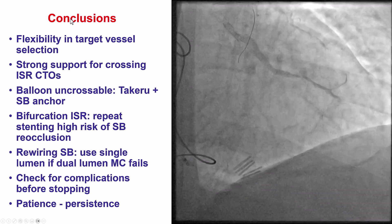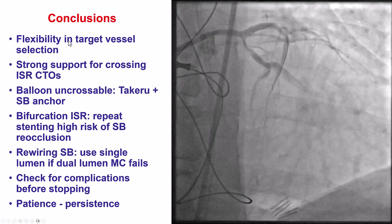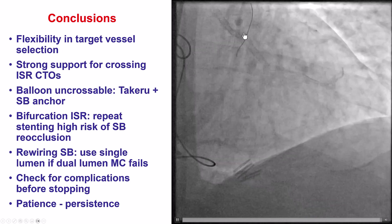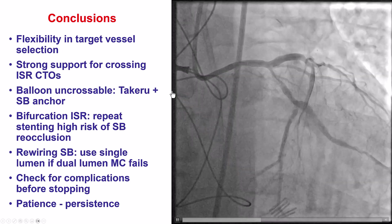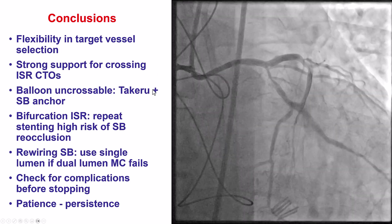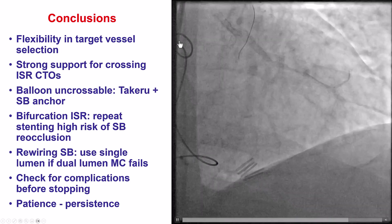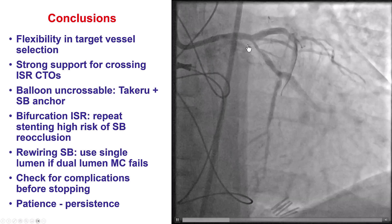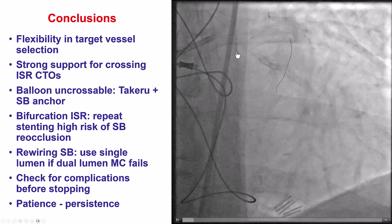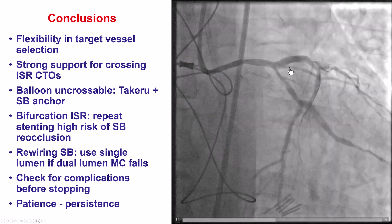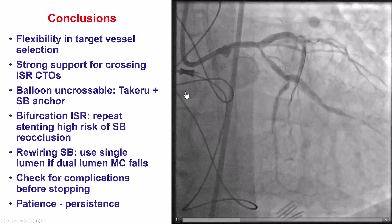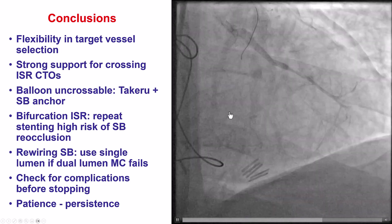There are multiple lessons from this case. The first is the potential flexibility in selecting the target vessel. This patient had both an RCA and a circumflex CTO. Although we initially tried to open the RCA, because of the EKG changes we switched to the circumflex, which ended up being successful without hemodynamic changes. So if the patient continues to have symptoms, going back to the right may be safer because we now have good perfusion of the lateral wall.